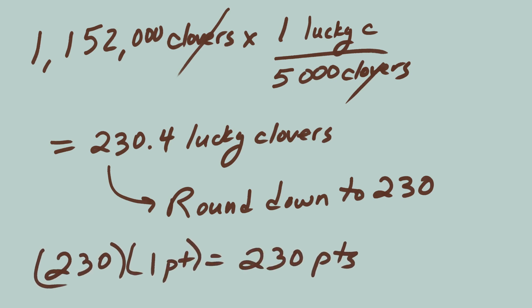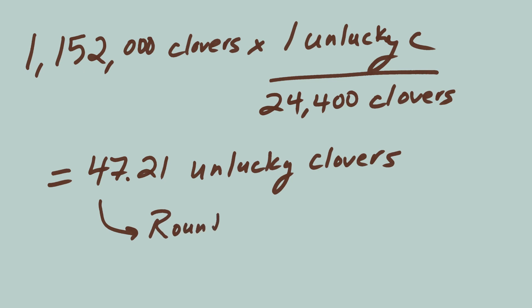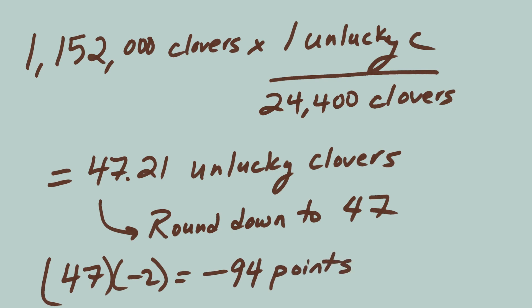But wait, remember, you also have a chance of finding the unlucky 5-leaf clovers. Let's find out how many of those you are likely to find. 1,152,000 clovers times 1 unlucky clover per 24,400 clovers, which equals 47.21 clovers. Again, you can't find 0.21 clovers, so you round down to 47 clovers. Each of those loses you two points. 47 times 2 equals 94. So your total score is 230 minus 94 equals 136 points.